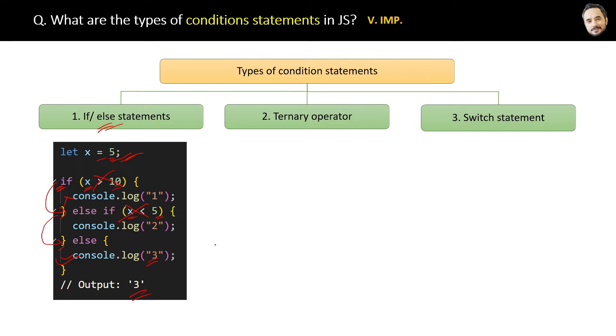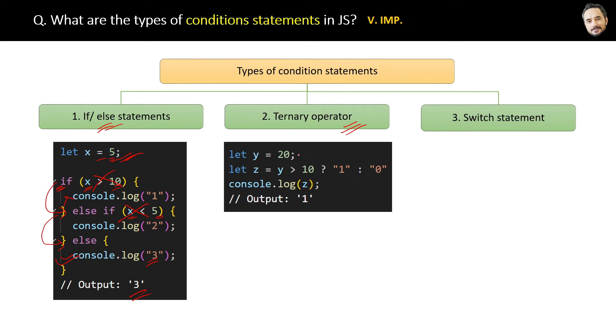This we call if/else condition. The second type of conditional statement in JavaScript is the ternary operator. Here we have a variable y equal to 20. Now we will create a new variable z, which will first check whether y is greater than 10.